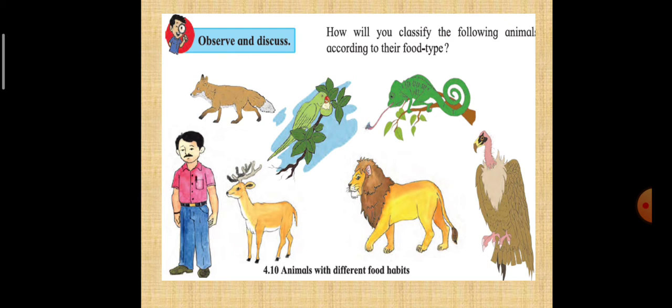A wolf, it is omnivorous, it can eat both dead and decaying organic matter or even maybe plant material. A parrot, it can eat fruits, it can eat insects both. Humans, they also can survive both on plants and animals and take up their nutrition.